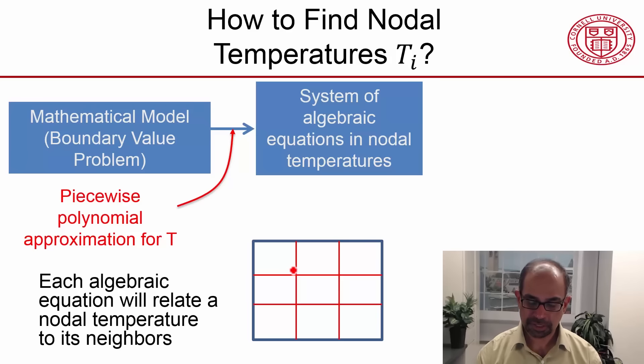For instance, if I consider this particular node, when the solver derives the algebraic equation for that node, it will relate the nodal temperature—let's say if this is node 3—it will relate T3 to the neighboring temperature values.